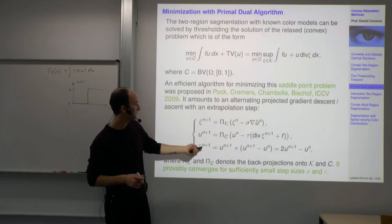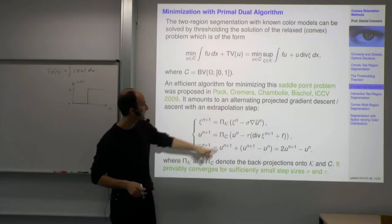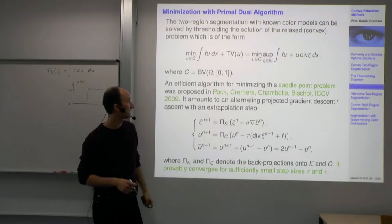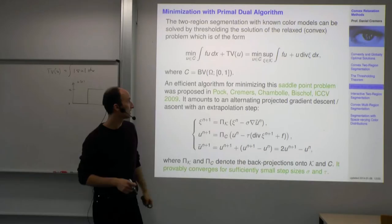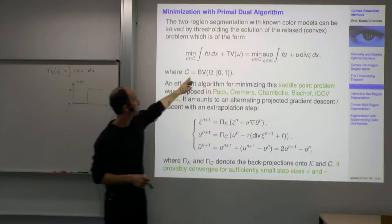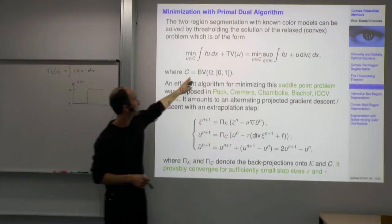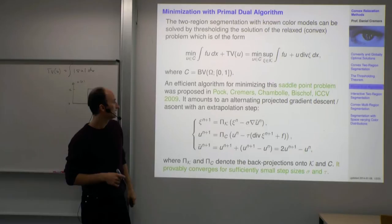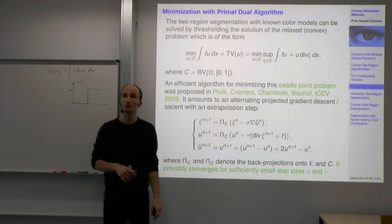For the gradient descent on the primal variable, U appears in the divergence term and in the term with f. Since the expression is linear in U, the gradient is just f plus divergence of xi, and with gradient descent there is a minus sign. Then we back-project onto the convex set of functions with values in the interval [0, 1]. If you alternate just these two steps, you also get a solution to the problem.